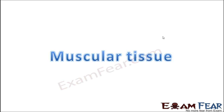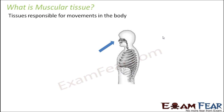Now we will go ahead with the third type of animal tissue, that is muscular tissue. Muscular tissue refers to tissues which are responsible for movements in the body. Earlier we saw epithelial tissue, which forms the covering and lining of different parts of the body, and connective tissue, which connects different parts of the body. Now muscular tissue is responsible for movements — moving our hands, legs, breathing, and heartbeat. All these internal and external movements in our body are because of muscular tissue.